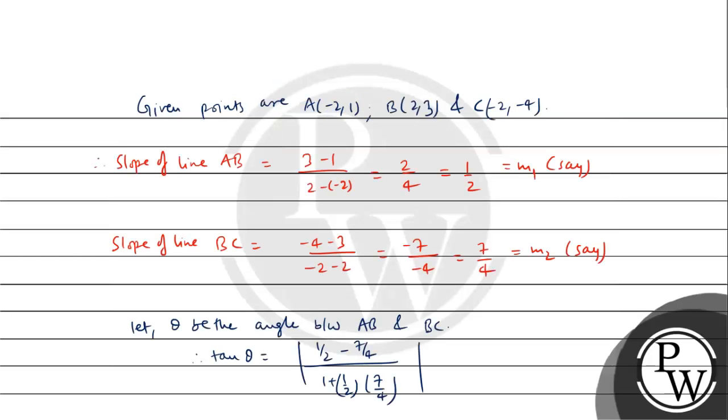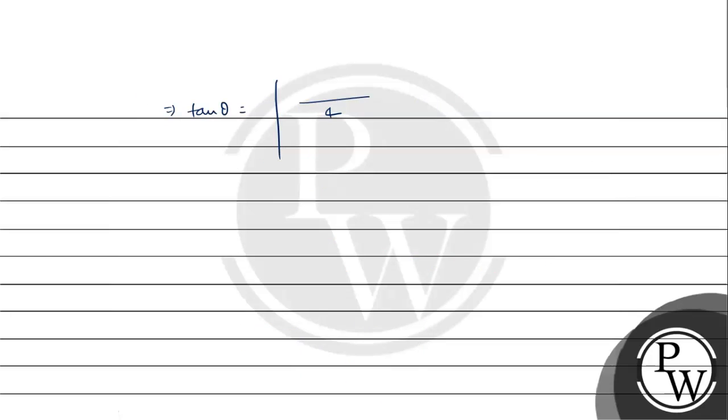Simplify it. Tan θ, what will be? In the numerator, there is 1/2 minus 7/4. LCM of 2 and 4 will be 4. 2 into 1 minus 1 into 7. Whole upon 1 plus (1/2) into (7/4). 7 upon 8.